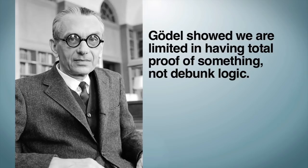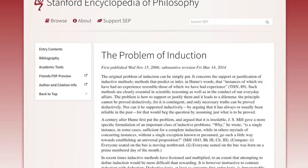All Gödel did was show we are limited in having a total proof of something. But even without Gödel, that is intuitively obvious. Many things will always just be 99% probably true, but absolute certainty will always be beyond our reach.